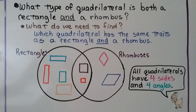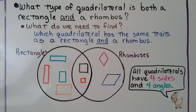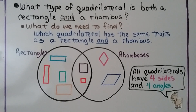What type of quadrilateral is both a rectangle and a rhombus? We need to find which quadrilateral has the same traits as a rectangle and a rhombus — that it has both. Remember, all quadrilaterals have four sides and four angles, so we're looking for something with four sides and four angles.